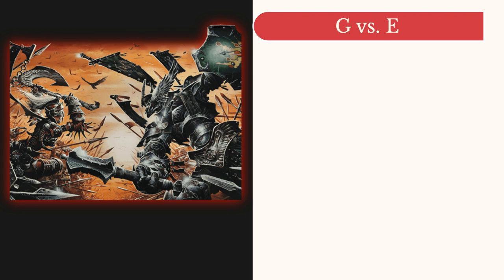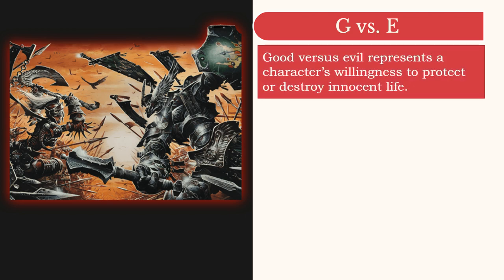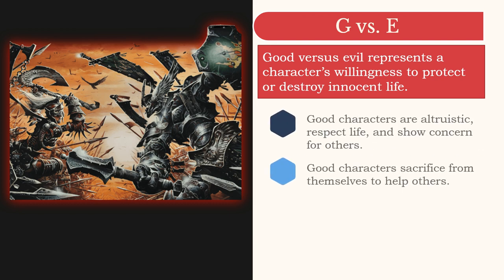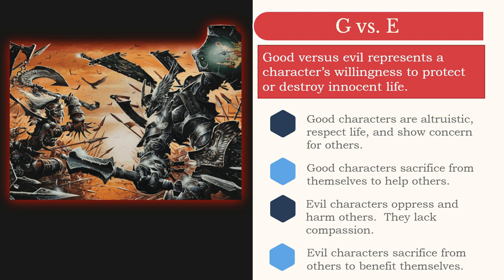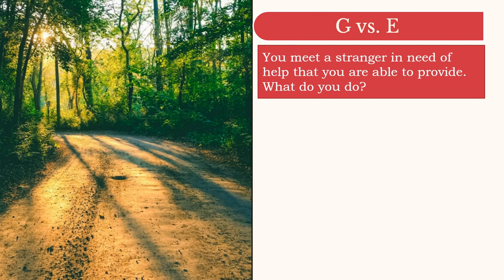Let's tackle the good-versus-evil spectrum first. This represents a character's willingness to help others. Good characters have a respect for life and freedom, while evil characters are willing to torture, kill, or enslave to further their own goals. When working with new players, I often paint the picture like this: you're walking down the road and you encounter a stranger. You don't know them, and they are in dire need of help. You're able to provide this help, but must sacrifice something fairly valuable to do so. I don't describe the scenario beyond that — I don't get into specifics, what kind of trouble they're in, or what you'll have to sacrifice to help them. You don't want to get bogged down in details, as this is just meant to be a quick gut check.